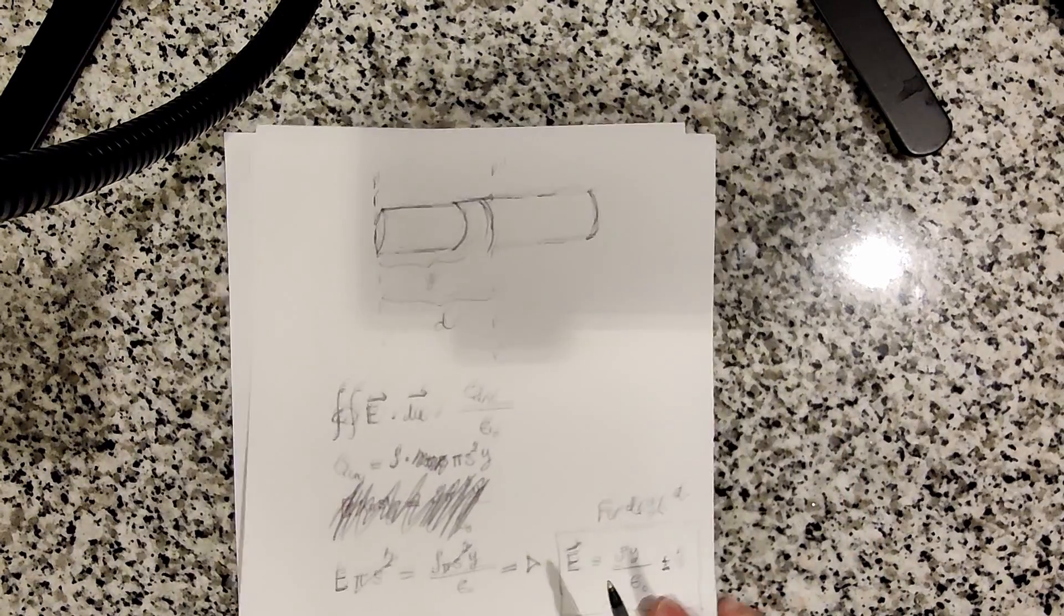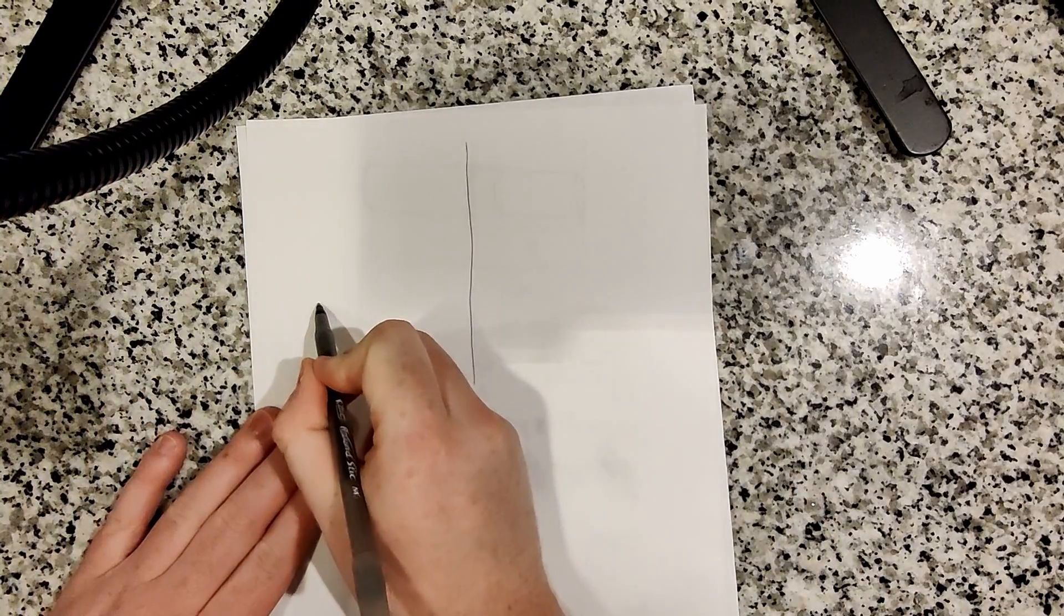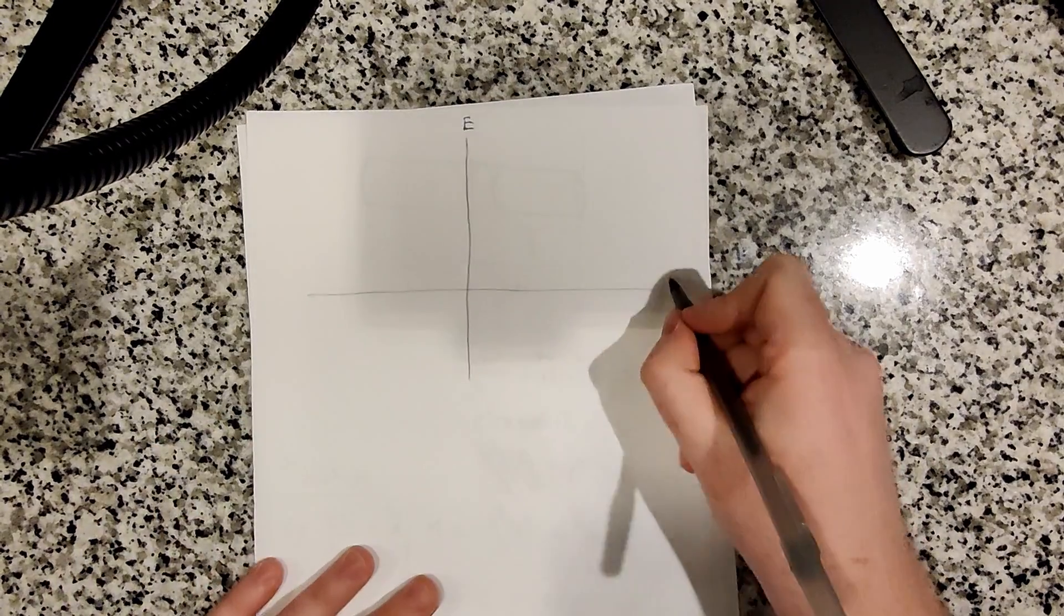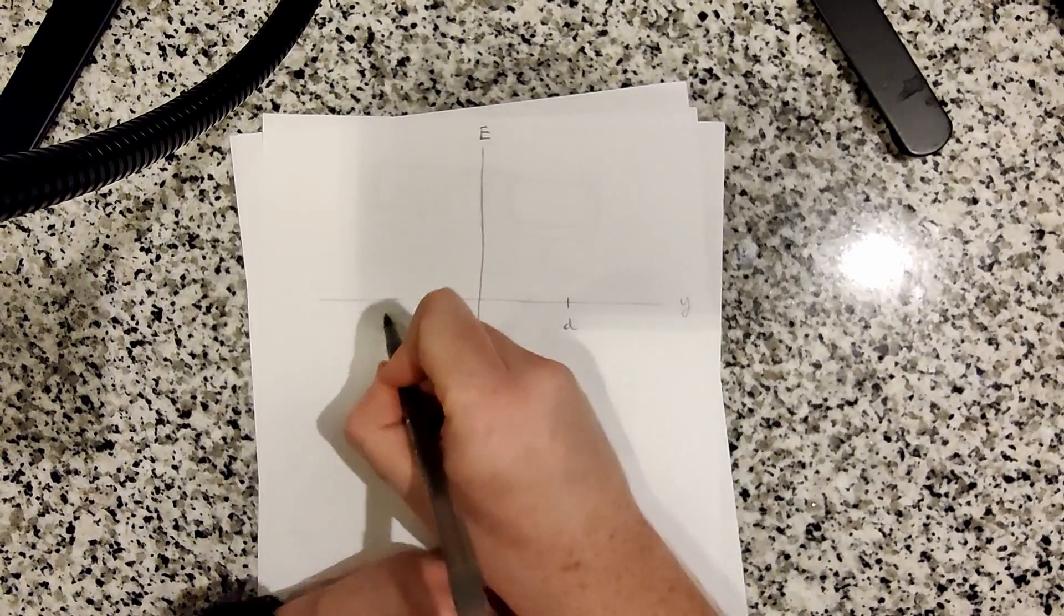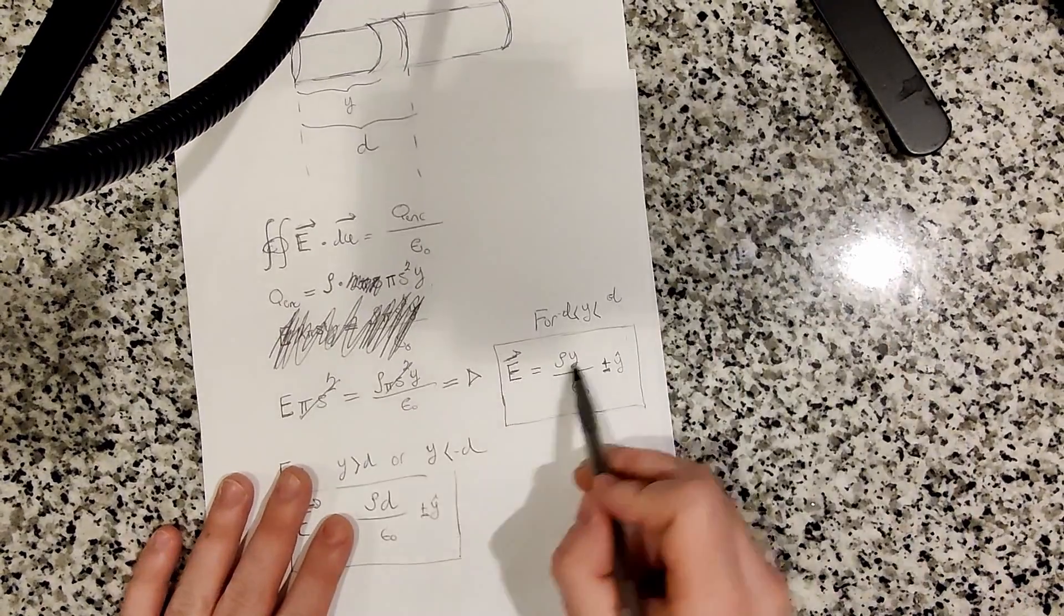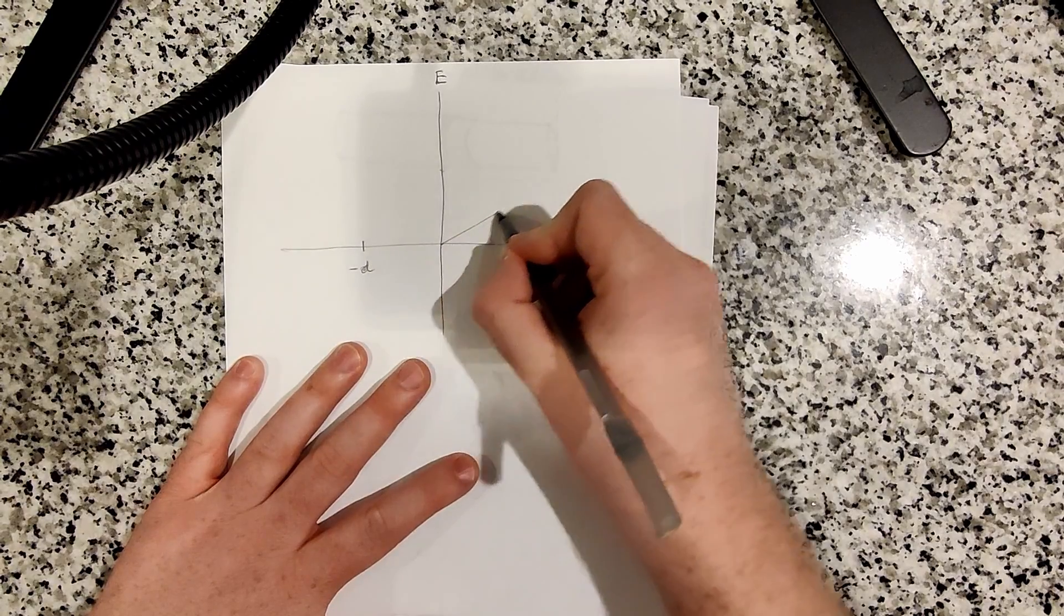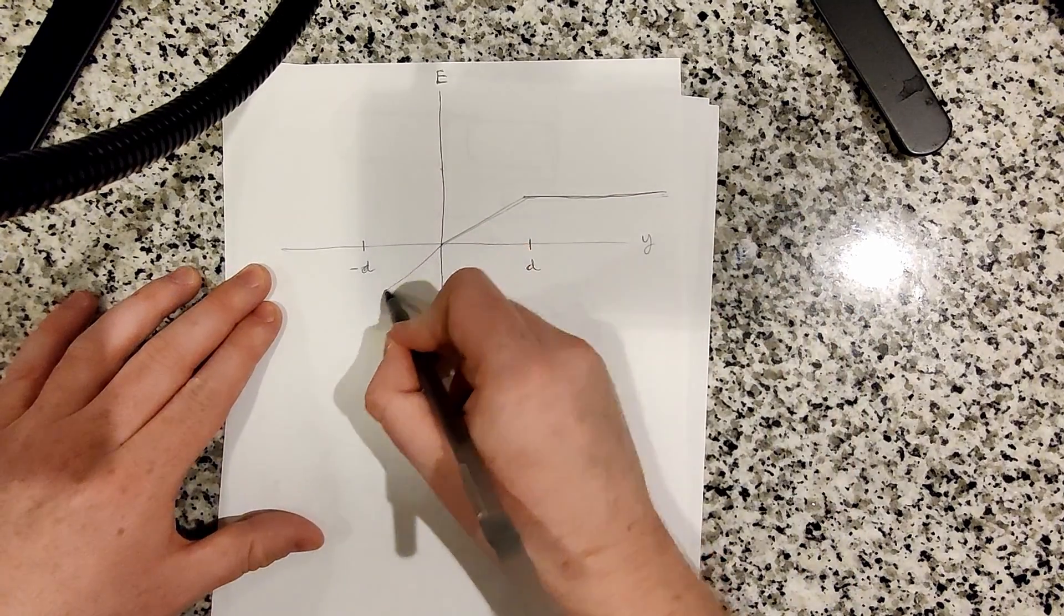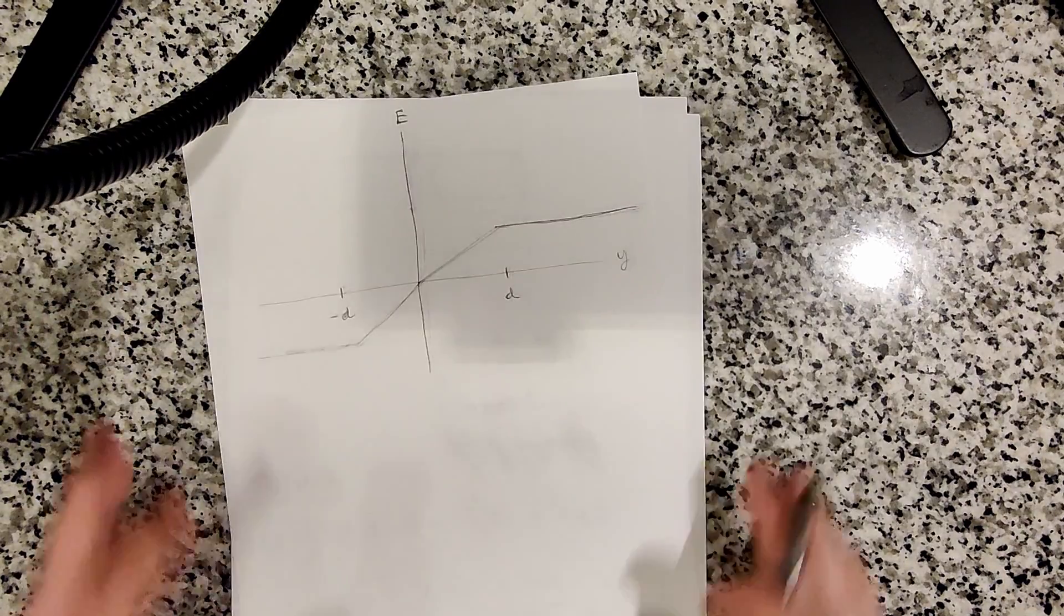Now we just need a graph, which is pretty simple to make. Let's draw a quick sketch. This is the axis for the electric field magnitude, and this is the y-axis. Let's mark distance - this is d here, this is minus d. As you saw in our equation, the electric field increases linearly with y until you get to a distance d where it becomes a constant. So it would just be like a straight line with constant slope, and then a straight line that way with negative slope. And when you get to minus d, you get a constant negative electric field. That's what the graph would look like.